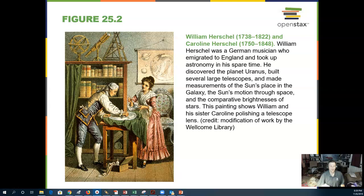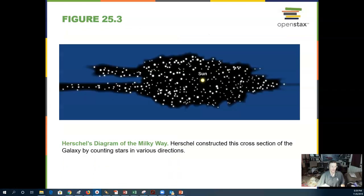William Herschel was a German musician who took up astronomy and ended up discovering the planet Uranus. He made several large telescopes and also looked at the Sun's place in our galaxy, among other things. Here is his diagram of what he thought the Milky Way looked like, and he put the Sun close to the middle.